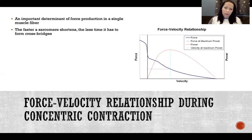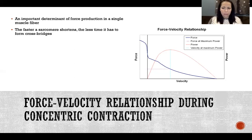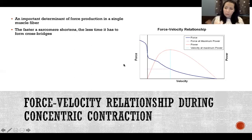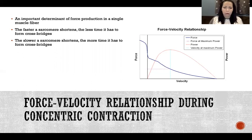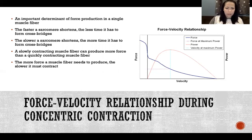The faster a sarcomere shortens, the less time it has to form cross-bridges. Forming cross-bridges is really how the fiber is going to produce force. So the fewer cross-bridges we form, the less force that sarcomere is going to be able to produce. The faster the sarcomere shortens, the fewer cross-bridges it is able to make. So faster contraction equals less force production. Slower contraction means there's more time to form cross-bridges, and that means we're able to produce more force. A slowly contracting muscle fiber can produce more force than a quickly contracting one.